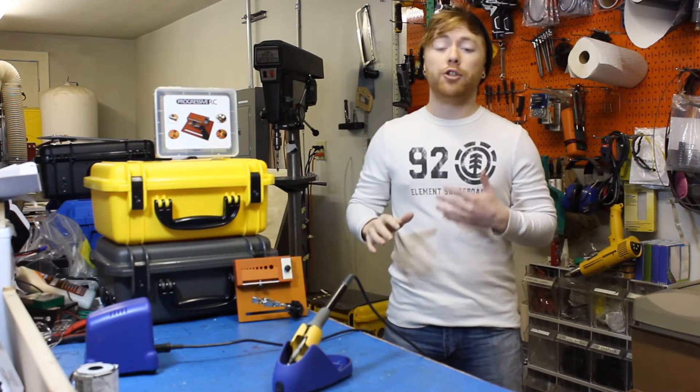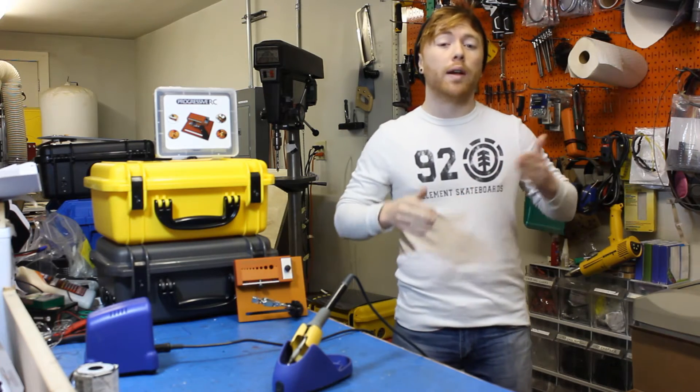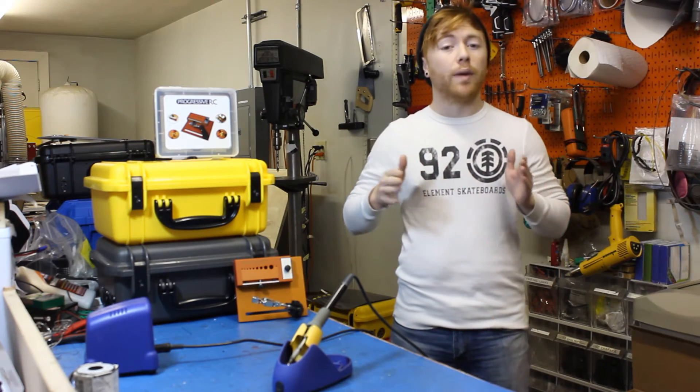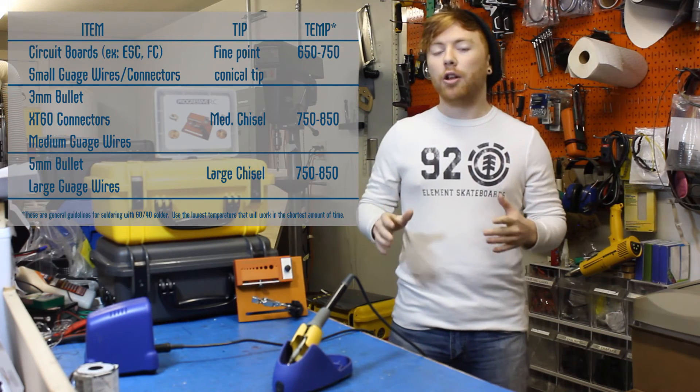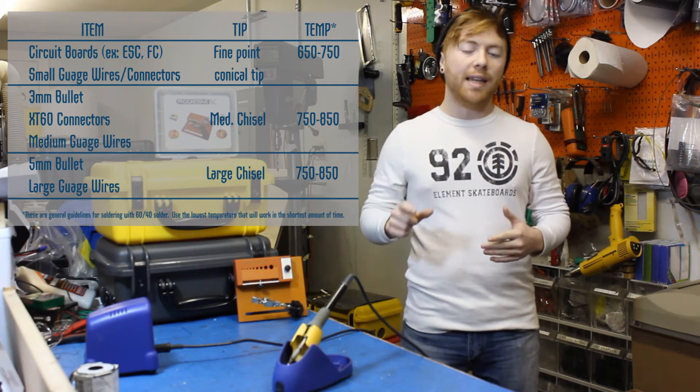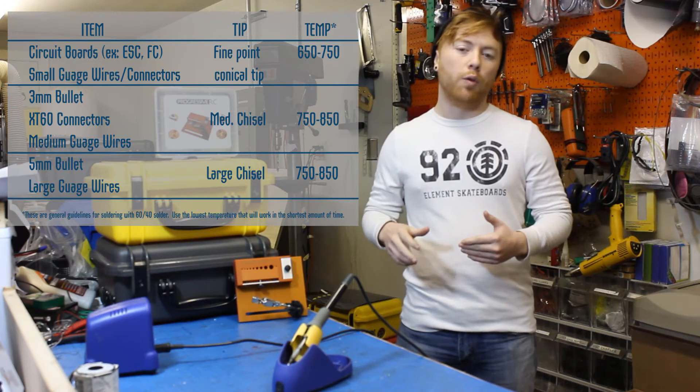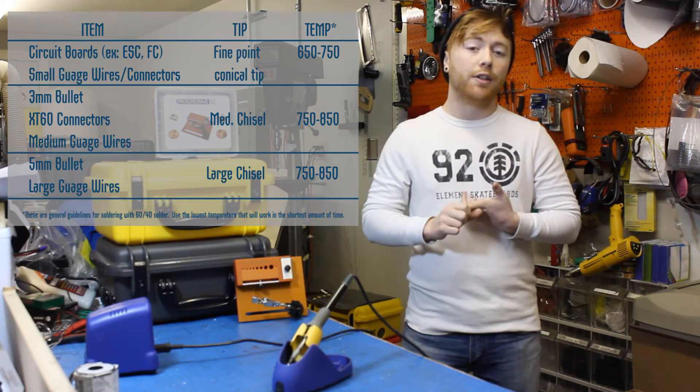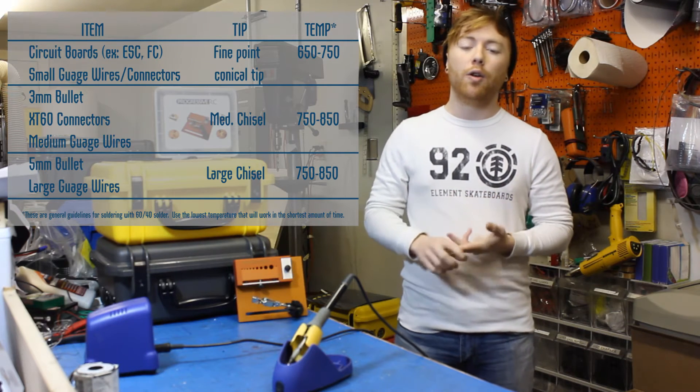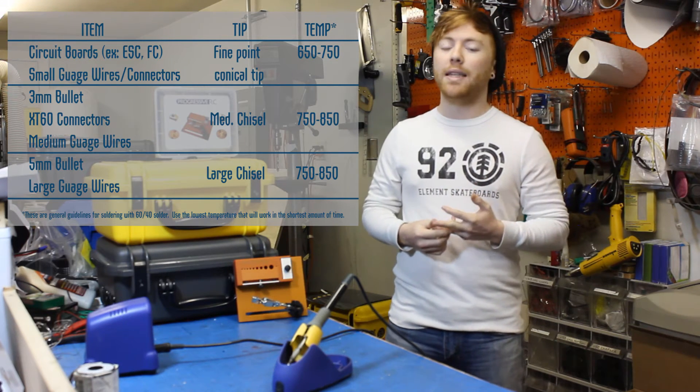Another really important tip with choosing the correct iron is choosing the correct wattage and the correct tip size. There's a few different tip sizes. A smaller chisel tip will hold the heat a little bit better and will work better for your EC3 or XT60 connectors, any of the three millimeter bullets, or a slightly larger chisel tip for EC5s.